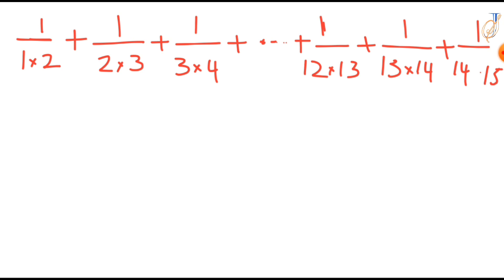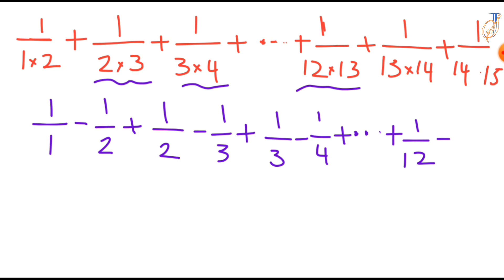So what you observe here, each term in the series can be written as 1 over 1 minus 1 over 2, plus 1 over 2 minus 1 over 3, plus the third term 1 over 3 minus 1 over 4, plus so on. This term we can write it as 1 over 12 minus 1 over 13, plus this term we can write it as 1 over 13 minus 1 over 14, minus 1 over 15.